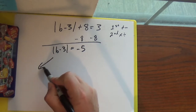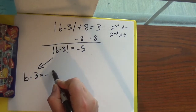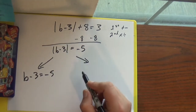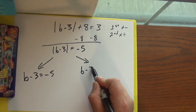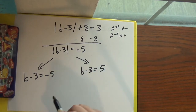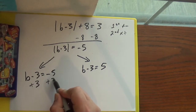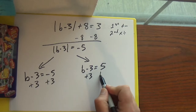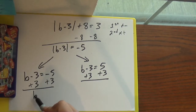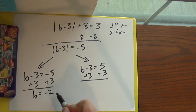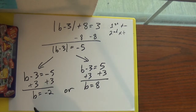And now I've got to break this into two cases. So I'm going to have the 'does nothing' side and the 'does something' side — I'll just change the sign on the other side. So B minus 3 equals 5. And now I need to add 3 to both sides of each case. So over here B is negative 2 and over here B is 8. You get two answers.